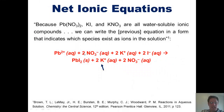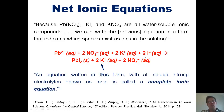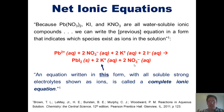For lead iodide, it was insoluble in water and hence is left completely alone. For potassium nitrate, we follow the same process we did for potassium iodide. When we write an equation in this form — with all of the soluble electrolytes shown as ions separated out and the precipitate shown not separated — this is called a complete ionic equation.